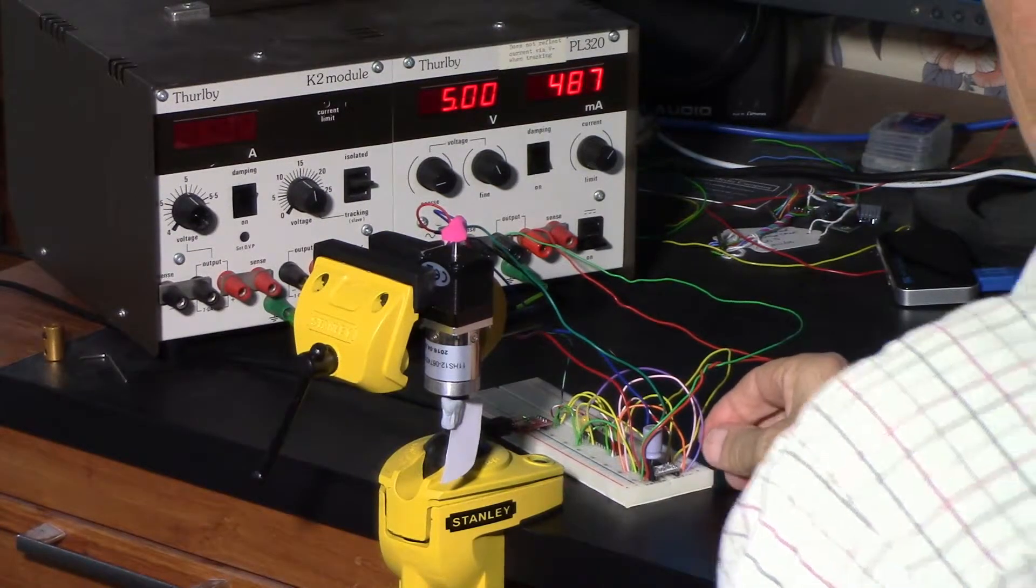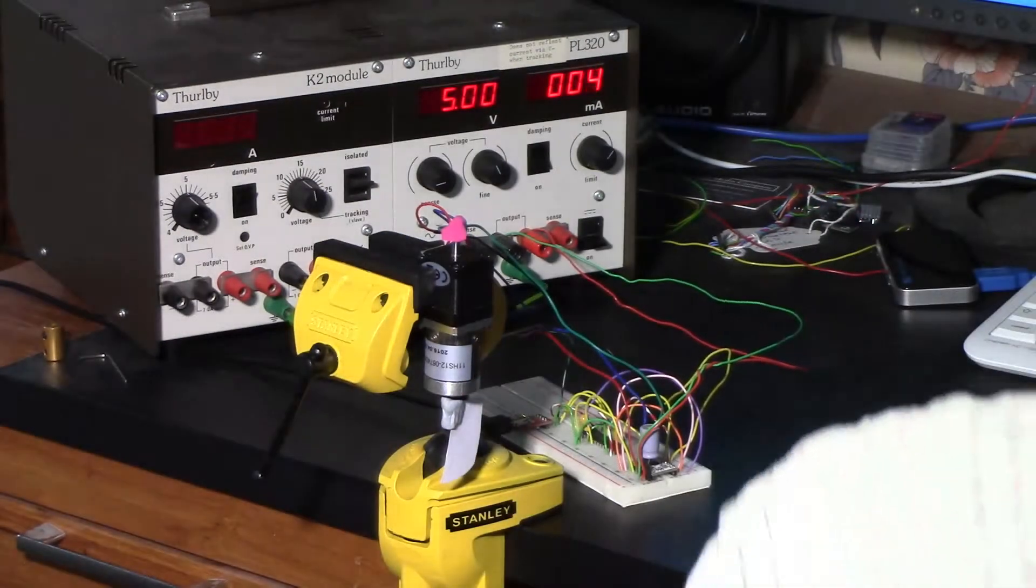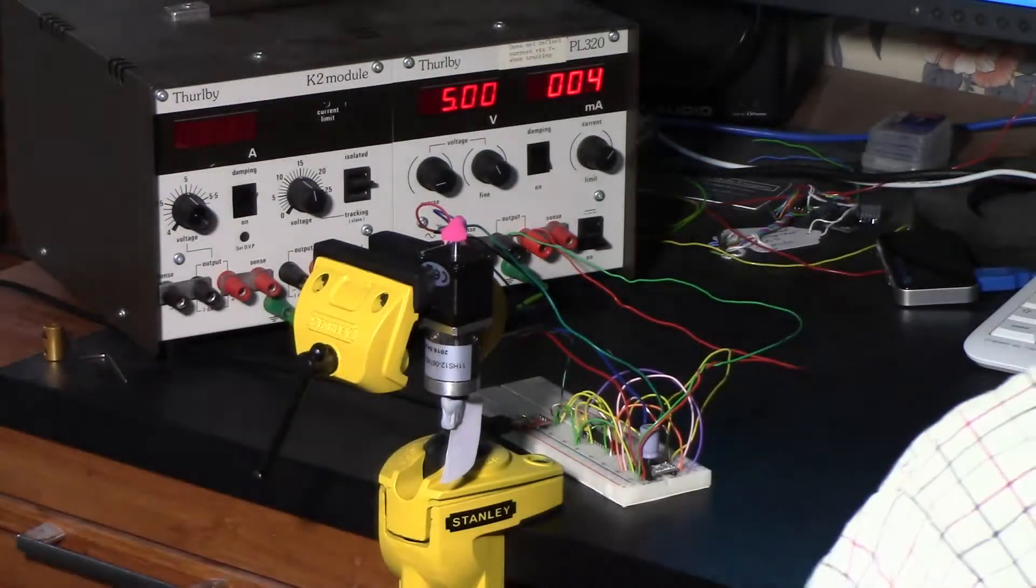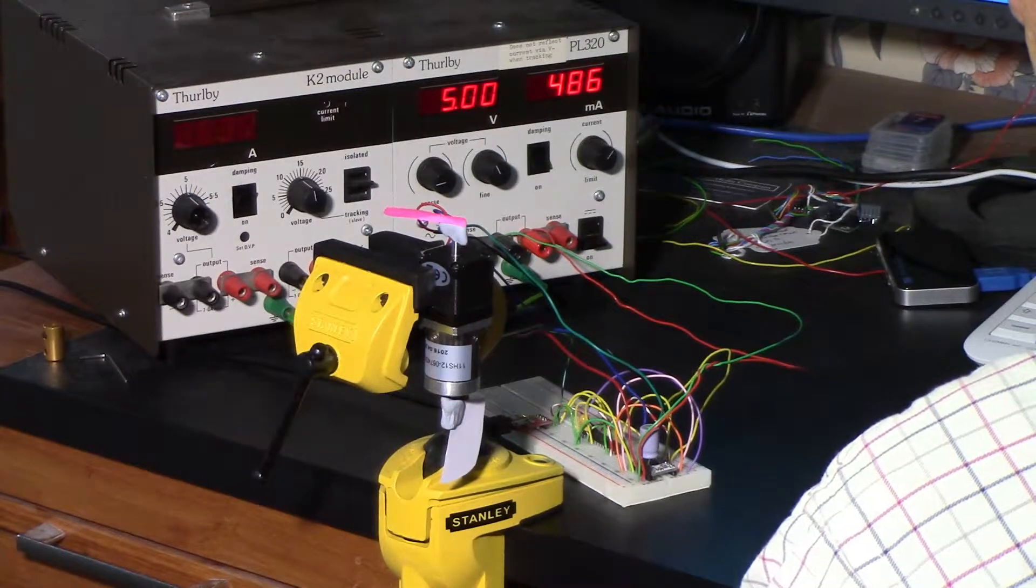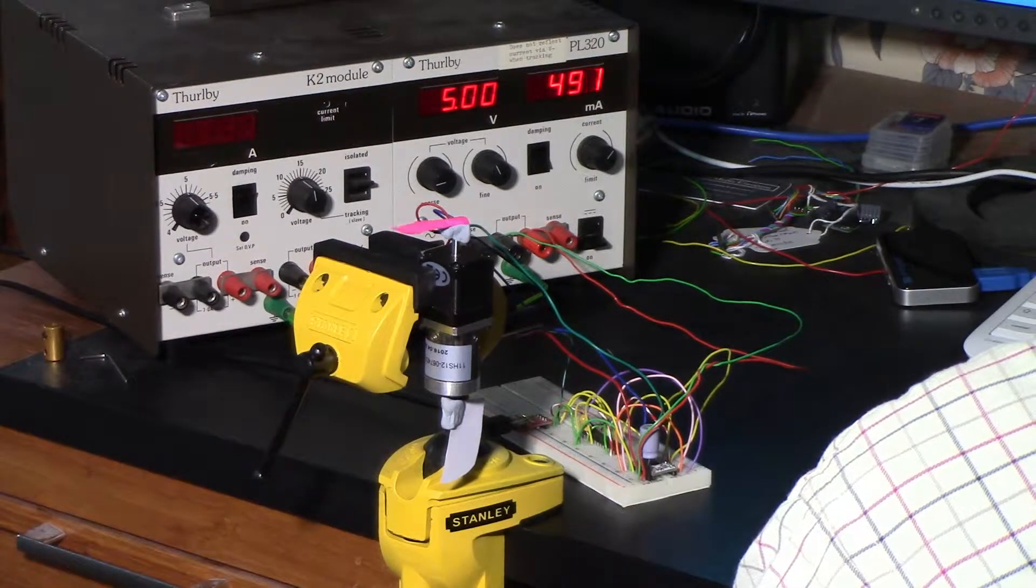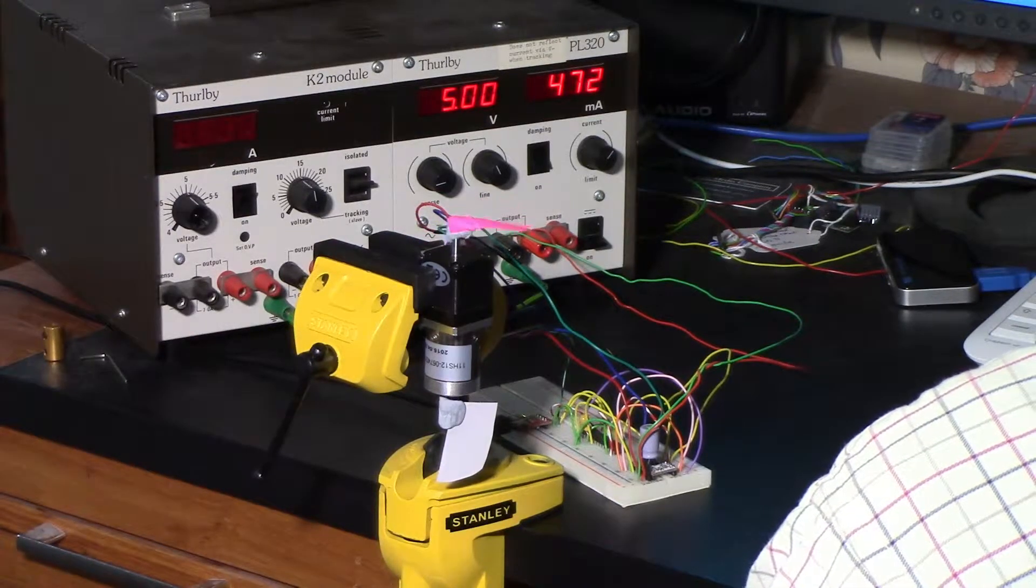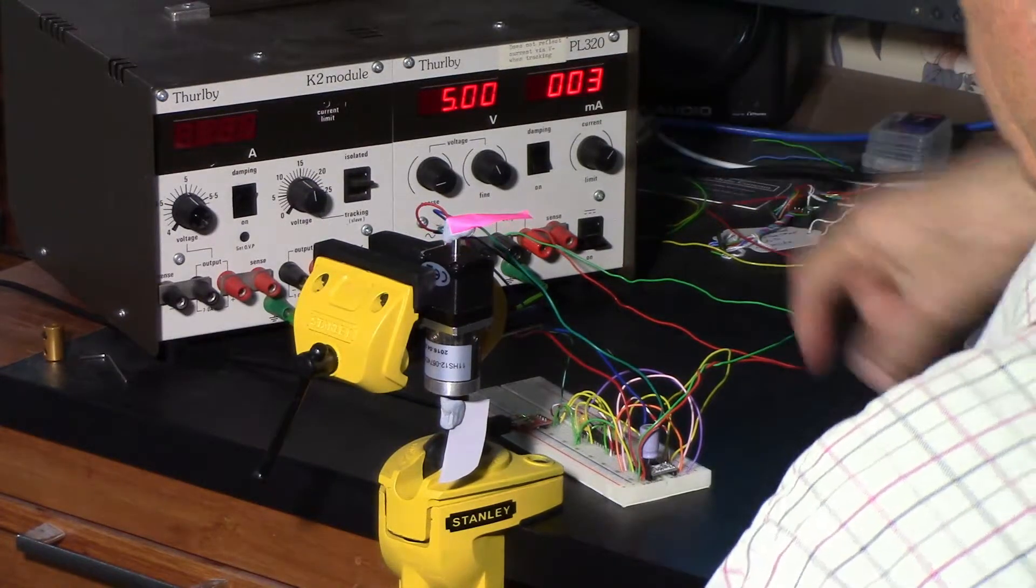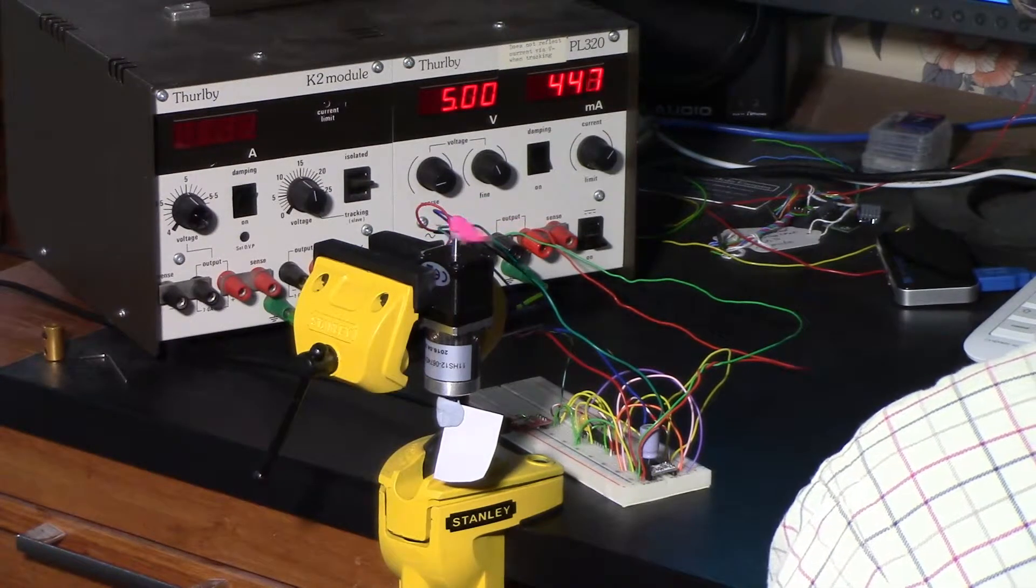So I'll just re-enable that and if I run a test program, this is stepping the motor at 20 steps a second, and now it's stepping it at 120 steps a second. You can see that the current is slightly less. That's 220 steps a second.